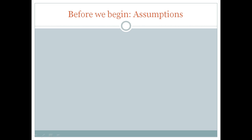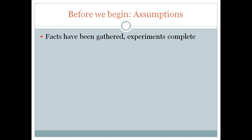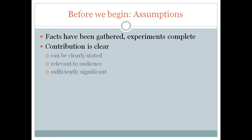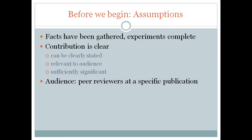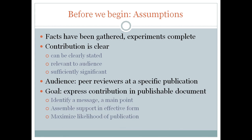Before we begin discussing the paper writing process, let's establish our assumptions. First, we assume that all the facts have been gathered — we don't need to do any more experimenting. Second, we assume that the contribution is significant and that the audience, meaning the peer review committee, will consider it relevant and that the contribution is clear. Third, we assume that the audience is the peer review committee at a specific publication, so we know the audience. Finally, the goal is to maximize the likelihood of publication.